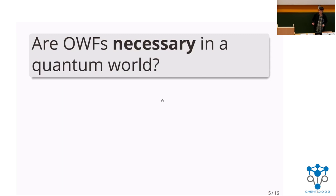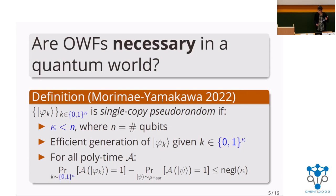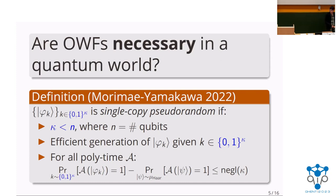In this talk we focus on quantum pseudorandom states — specifically single-copy pseudorandom quantum states. Informally, this is a keyed ensemble of quantum states with the property that it stretches a shorter key (say kappa bits to n bits, where n is strictly larger than kappa). It is possible to efficiently generate a state in this ensemble: given a key k, you can output phi_k in polynomial time by some quantum algorithm. And there's a computational indistinguishability criterion: a polynomial time quantum adversary, given a copy of one of these pseudorandom states, cannot distinguish it from a Haar random state with better than negligible probability.